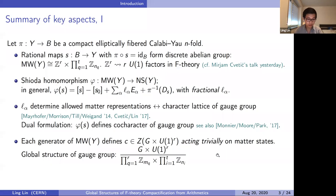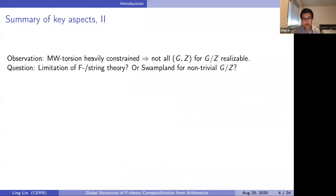Each generator of the Mordell-Weil group — free or torsional — defines a non-trivial element inside the center of the gauge group, which must act trivially on all matter states. So the gauge group is not just what one naively expects from a local analysis — some non-abelian gauge algebra times some abelian gauge algebra — but actually a non-trivial quotient where every generator contributes in general to a non-trivial relation that one has to mod out. This is an older result, but it highlights the interplay between math and physics and sets the stage for the second part.